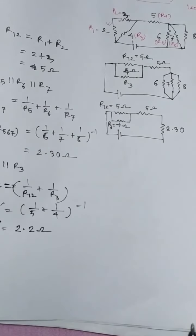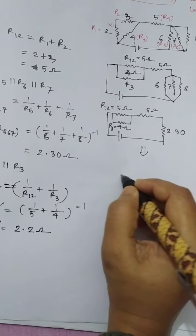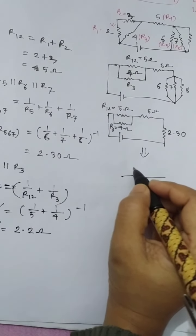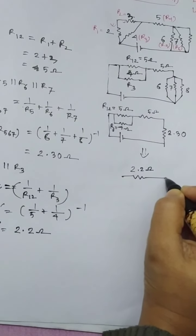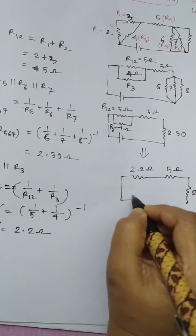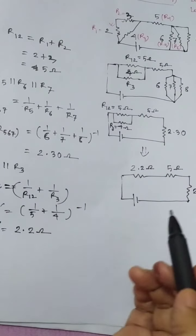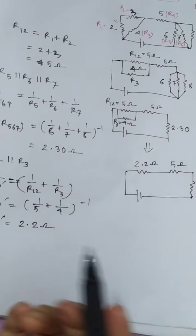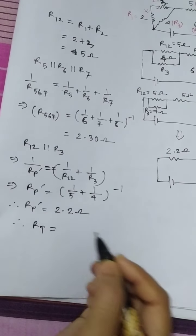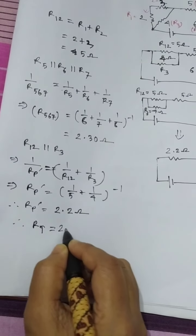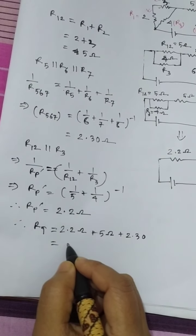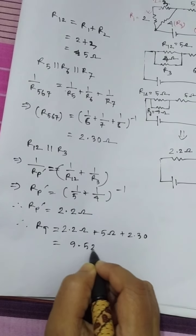After combining the parallel resistors we now have three resistors in series: 2.2 ohm, 5 ohm, and 2.30 ohm. This is now a simple circuit of three resistors in series. The total resistance Rt equals 2.2 plus 5 plus 2.30, and finally the equivalent resistance of the whole circuit is 9.52 ohm.